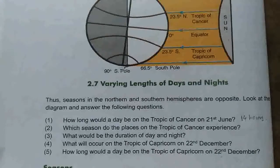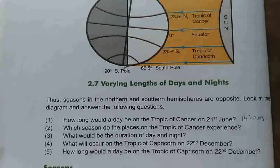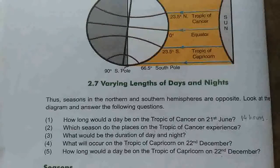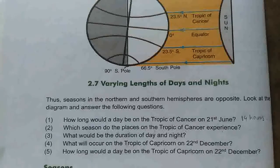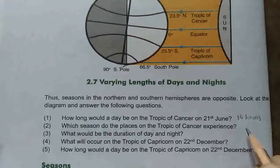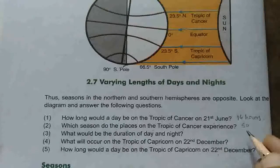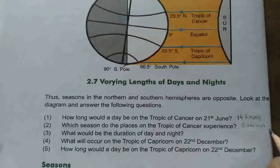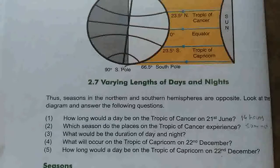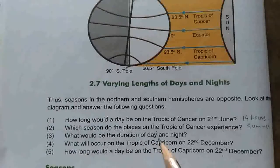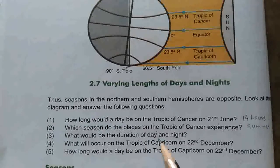The 14 hours is how long the day length becomes. What season does the Tropic of Cancer experience? When the sun rays pass over the Tropic of Cancer, which season occurs? That should be summer. On the Tropic of Cancer on 21st June, we experience summer. What would be the duration of the day and night? The day would be longer and the night would be shorter.